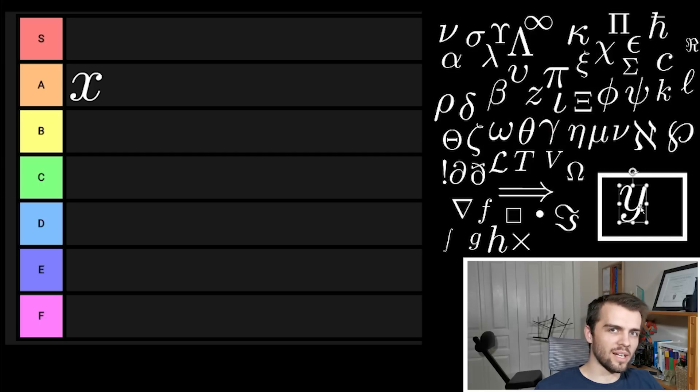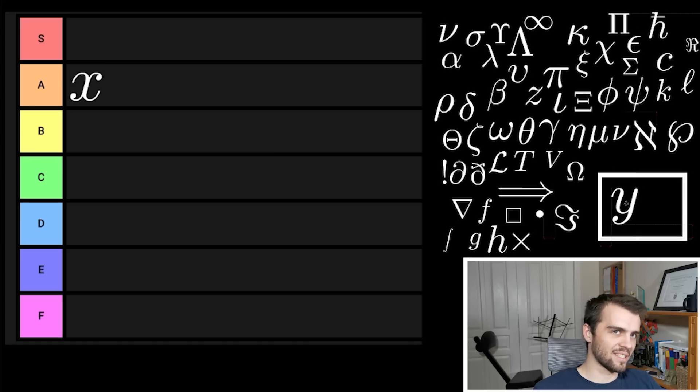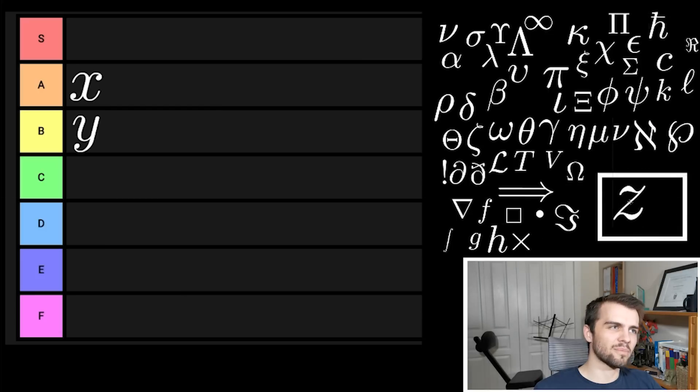Along with X of course comes Y. These are the basic symbols of math. You really can't do anything without X and Y. If I couldn't use them again I honestly don't know what I would do. I would drop out, join biology. Y is pretty good, not quite X. Y is going to be B tier. And like Y, of course you have Z, the third Cartesian coordinate. A nice looking symbol, but I'm still going to put it probably in C tier.